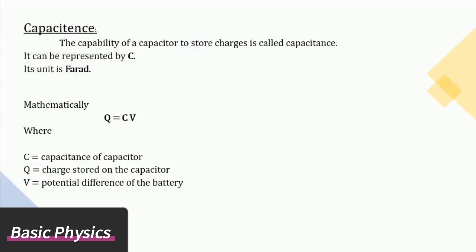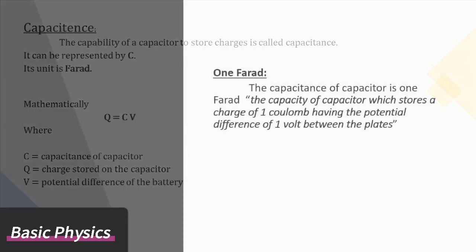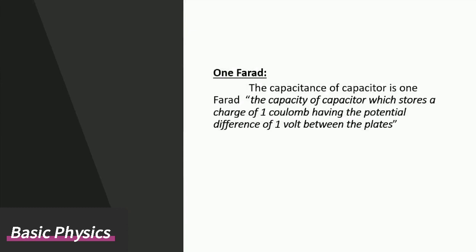Capacitance: The capability of a capacitor to store charges is called capacitance. It can be represented by C. Its unit is farad. Mathematically, Q equals the product of capacitance and potential of battery. The capacitance of capacitor is 1 farad if the capacitor stores a charge of 1 coulomb having the potential difference of 1 volt between the plates. Farad is a large unit, so we use microfarad and nanofarad.